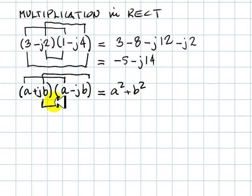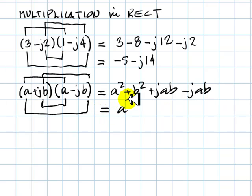And then, the imaginary part would be jab minus jab. The result is a squared plus b squared, a real number. When we multiply a complex number by its complex conjugate, what we get is this. What is this?